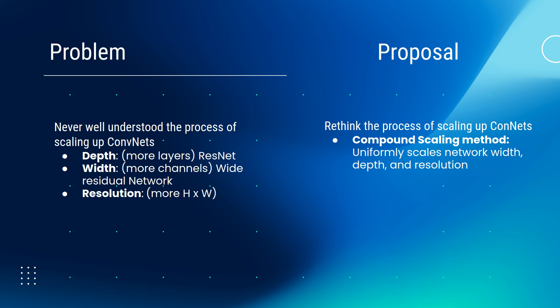That is exactly the proposal from this paper. EfficientNet proposes a compound scaling method that tries to uniformly scale the network in terms of width, depth, and resolution. The width here means more channels, depth means more layers, and resolution is just resolution.